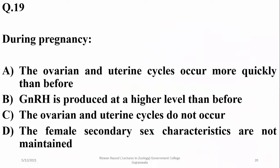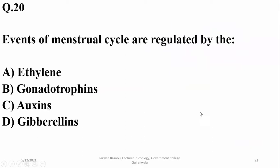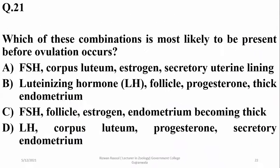Question number nineteen: during pregnancy, the ovarian and uterine cycles do not occur — that is the right answer. Gonadotrophic hormones are not produced at higher levels, and the female secondary sex characteristics statement is wrong. So option C.